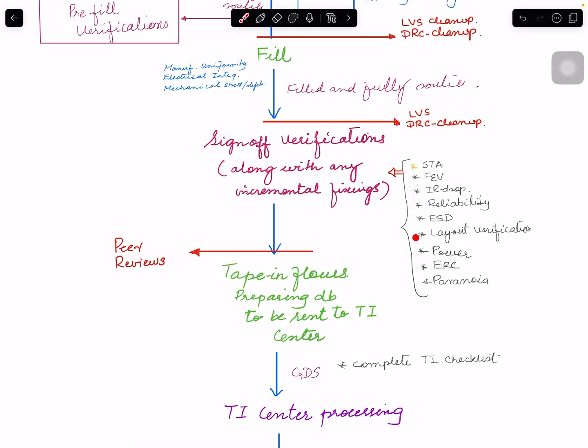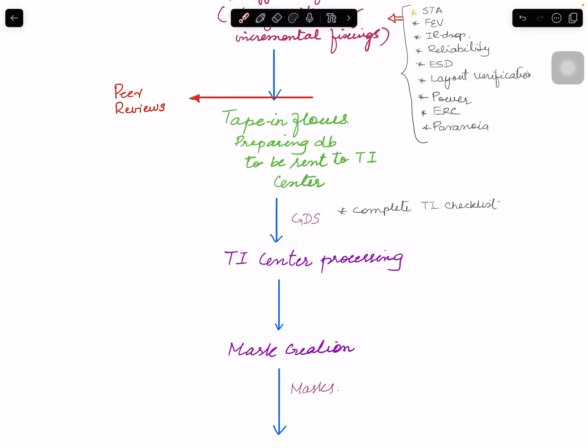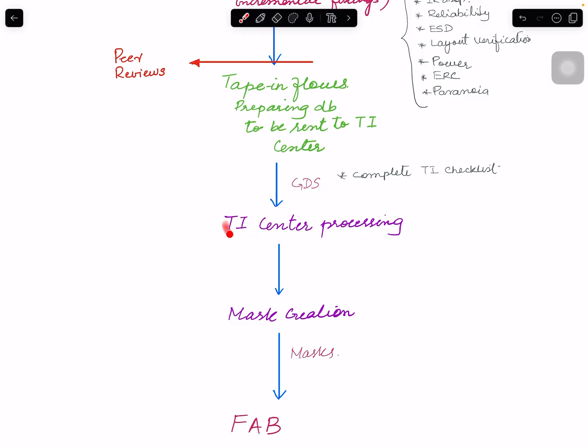And these are all different verifications that we do. So we will go into each of those in separate videos. And once everything, you run certain other commands in order to prepare a database that you can generate a GDS. And you make sure different checks are in place. You want to make sure all the reviews of the database for each of these flows is done. You don't want to make any mistake at this stage. If there's a mistake, you want to catch right now because once it goes beyond that, things will be very expensive. A small mistake can turn out to be huge in terms of dollars and the time it takes to get the chip to the customer.